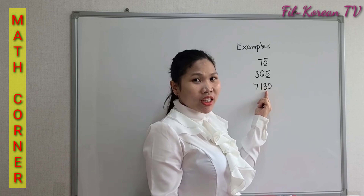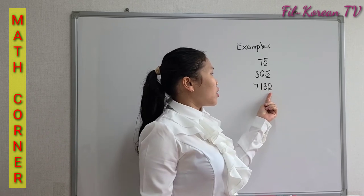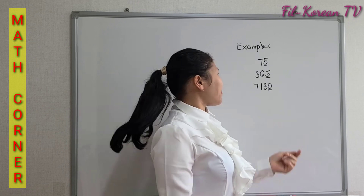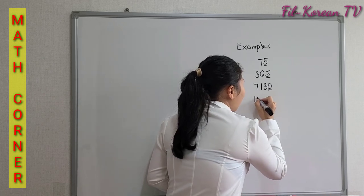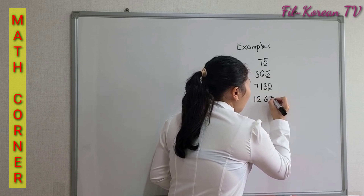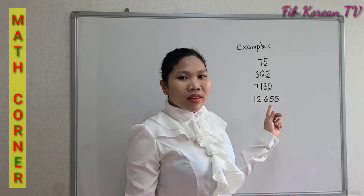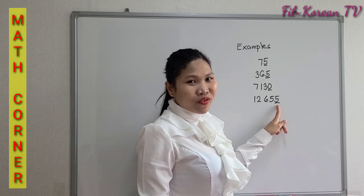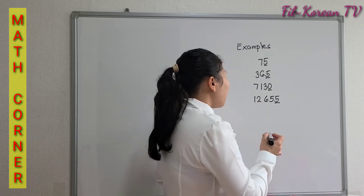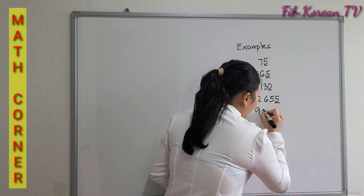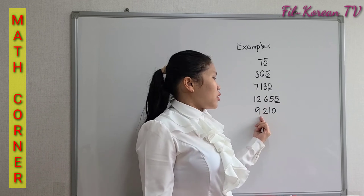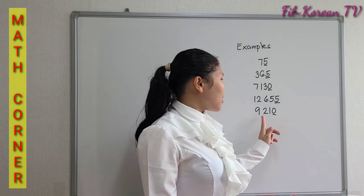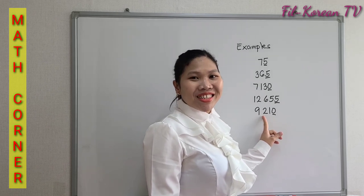Next, 7,130. This number ends in 0, and according to the rule, if a number ends in 0 or 5, it is divisible by 5. Also, 12,655 ends with 5 — another number divisible by 5. Last example: 9,210. It ends in 0, so that means this number can be divided by 5 with an exact answer.